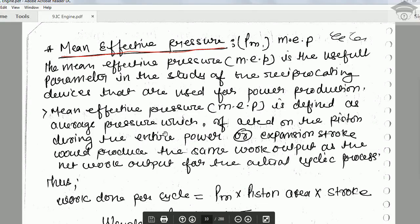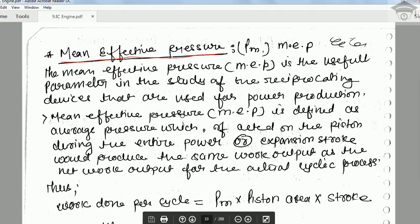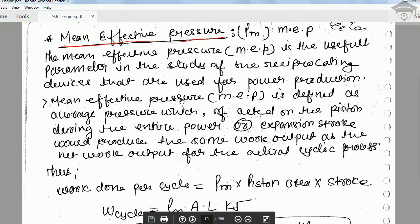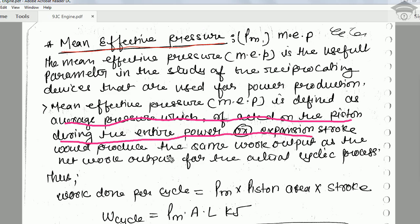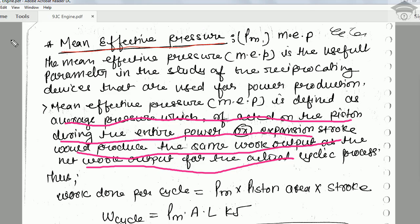In this video I am telling you what is the mean effective pressure and the theoretical and numerical aspects of it. Mean effective pressure is defined as the average pressure which, if acted on the piston of the cylinder of the engine during the entire power stroke or expansion stroke, would produce the same work output as would be obtained for the actual cyclic process.